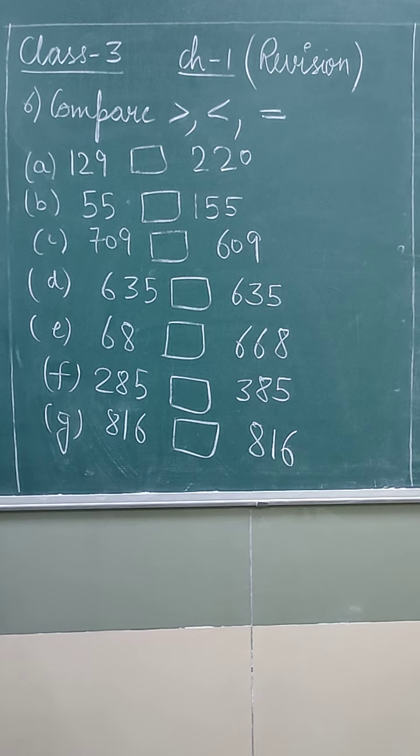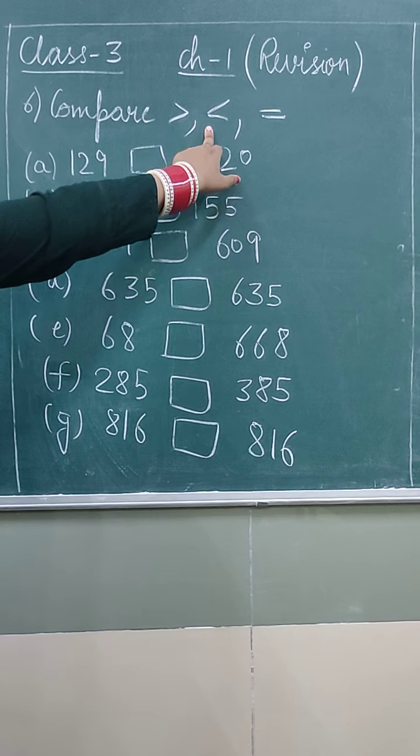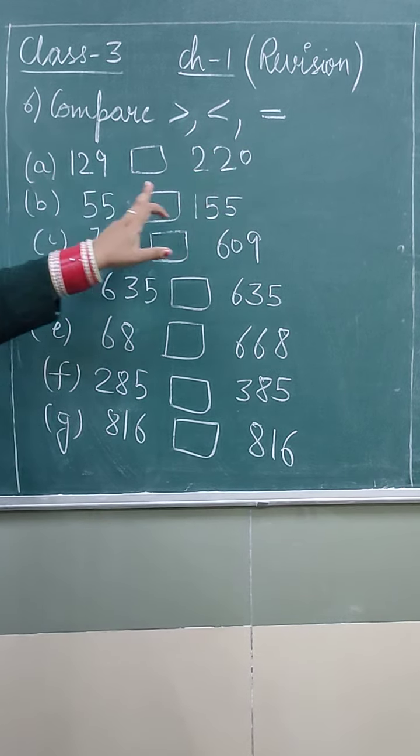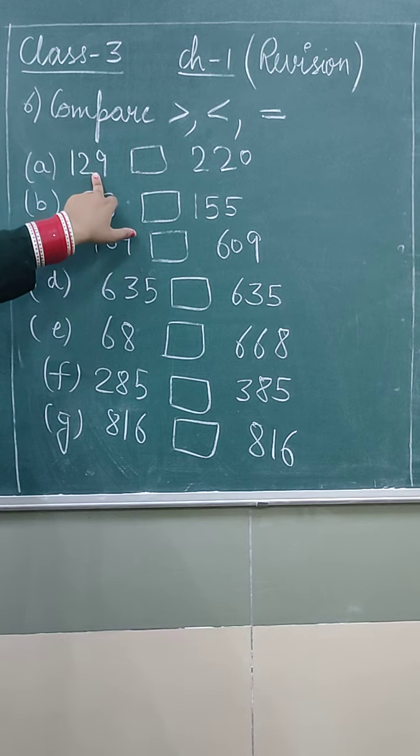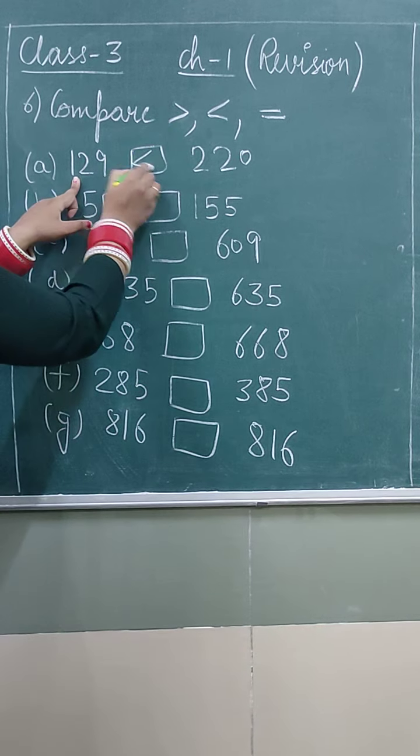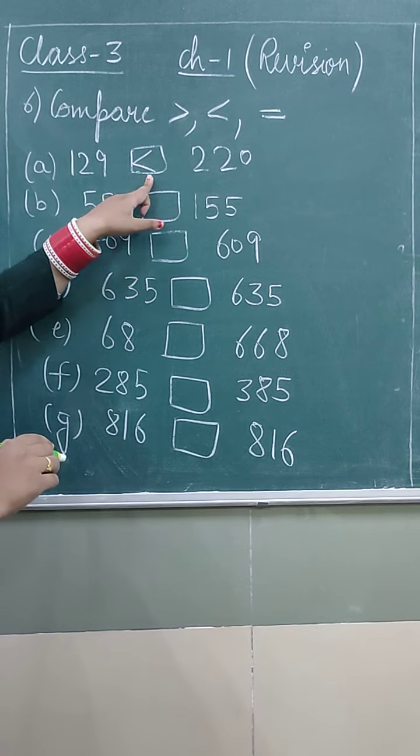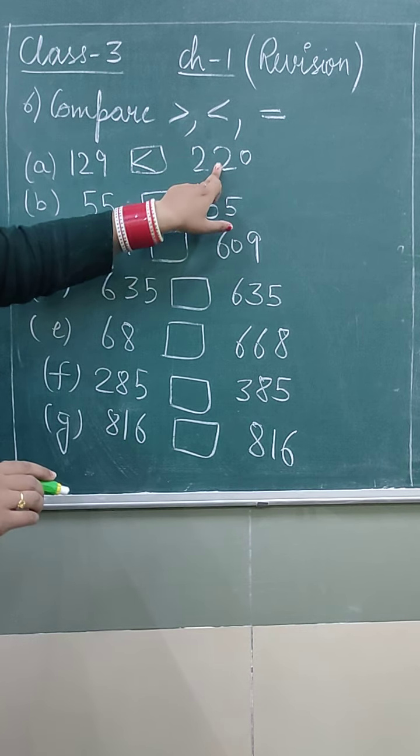So how would you do this? This number, this is greater than sign, this is less than sign, and this is equal to. Everyone know, 129 is greater or less than 220? 129 is less than 220. This is less than sign. It is facing towards 220, it is bigger.